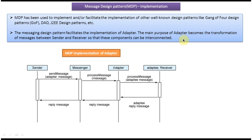Say the sender is sending a message to the receiver, but the sender is sending the message in format A, and the receiver can't understand format A — the receiver can only understand format B. So the sender can't send message A directly to the receiver. What the adapter does is take the message in format A, convert it to format B which the receiver can understand, do the transformation, and then send it to the receiver. Once the receiver gets the message it is in format B, so the receiver can understand and process it. That is the main work of the adapter — it performs the transformation of messages.